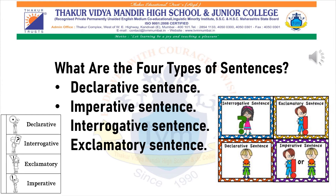But before that, I will give you a short introduction about each. Declarative sentences, also known as assertive sentences, are sentences that make statements. Imperative sentences are sentences which express a command, request, or any kind of advice. Interrogative sentences are sentences which ask questions. And exclamatory sentences — which we are going to study today — are sentences that express very strong feelings or strong emotions.